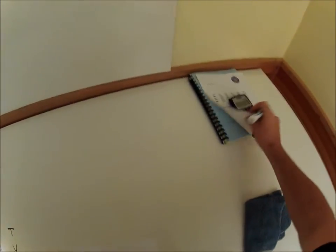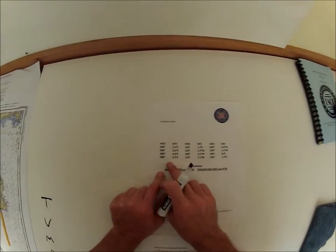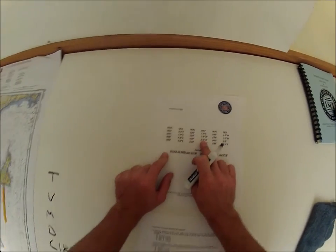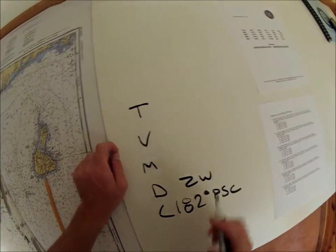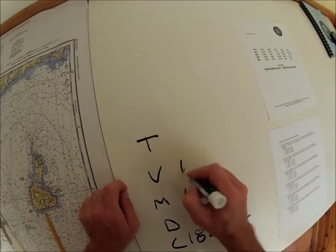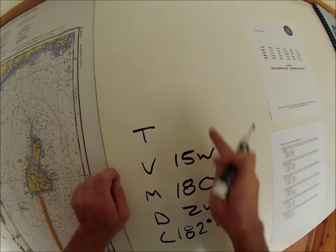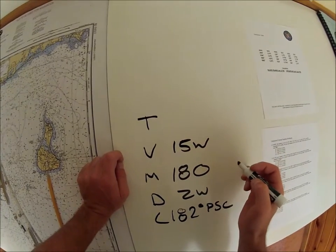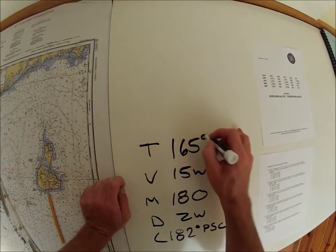Deviation from our table for 180 is 2 west. When we're going up we subtract, so 180 magnetic. Variation 15 west on Block Island, subtract it because we're going up, so we get 165 degrees true.